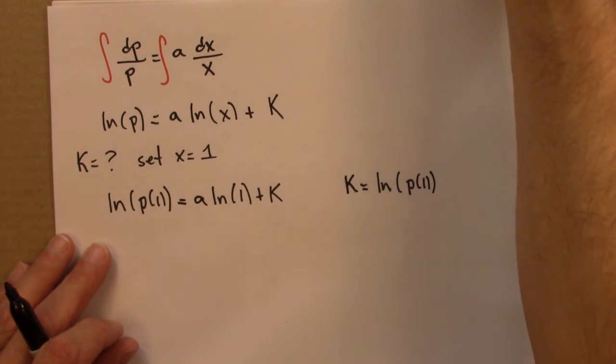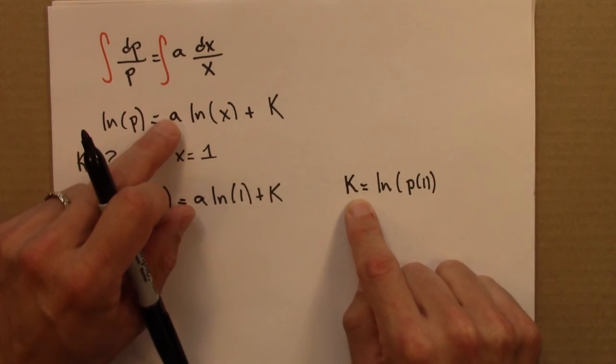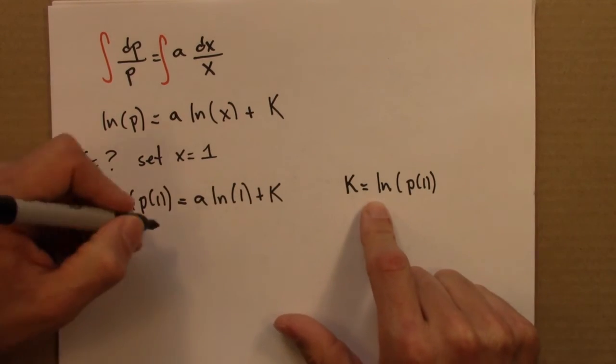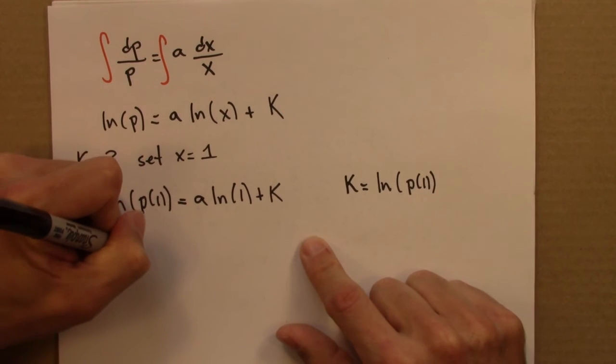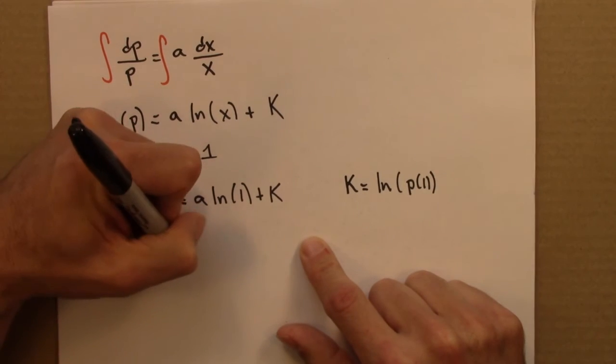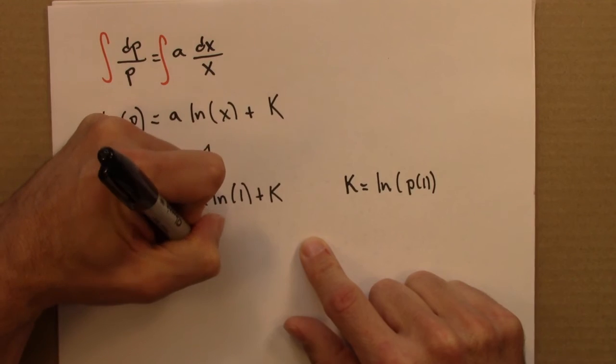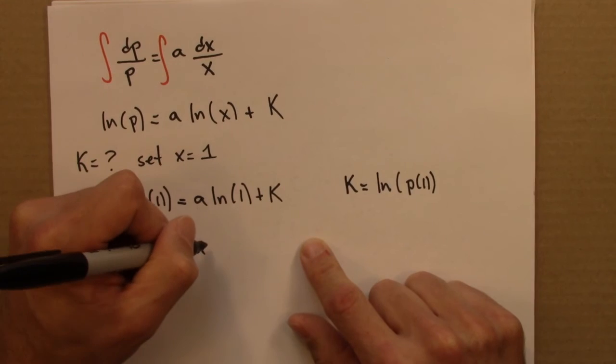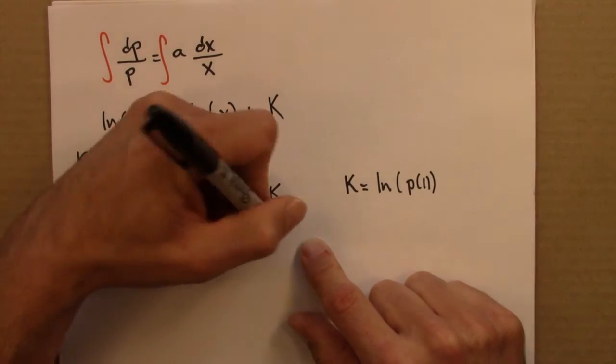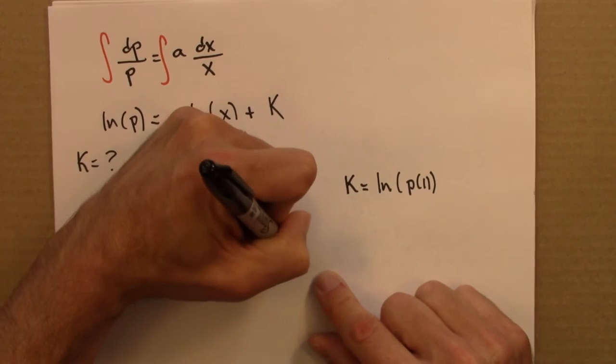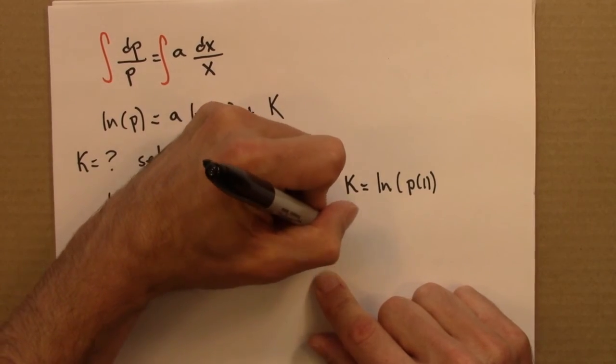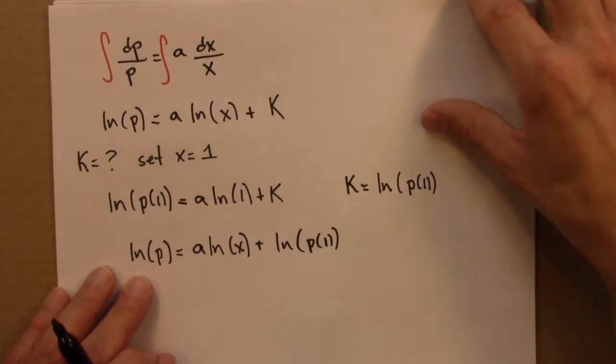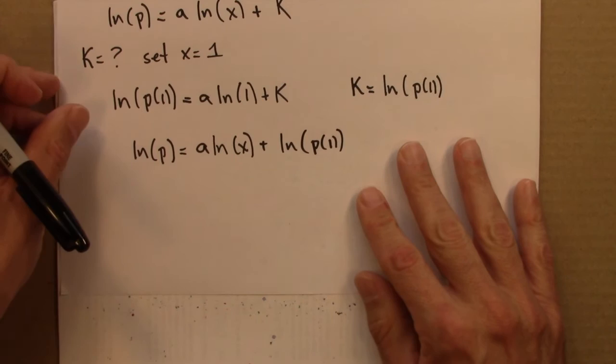So now I'm going to use that here and I'm going to put... what do I do? I'm going to leave this as a. So I've got natural log of P equals a log x plus log P(1). So now I want to get this in terms of P, not log P. So I'm going to exponentiate both sides.